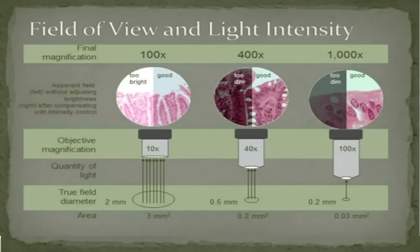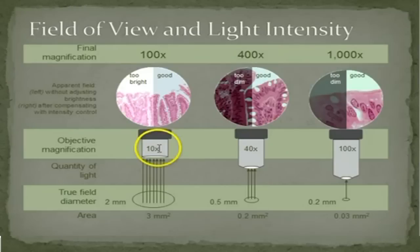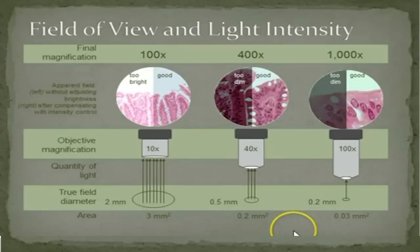To give you a more visual way of understanding that — this here is the field of view, what you're able to see when you're using your 10x objective lens. If we then move up to 40x magnification, you can see that the size of that circle has decreased. And again if we move up to 100x, it's decreased even further. That is what we're referring to when we talk about the field of view.